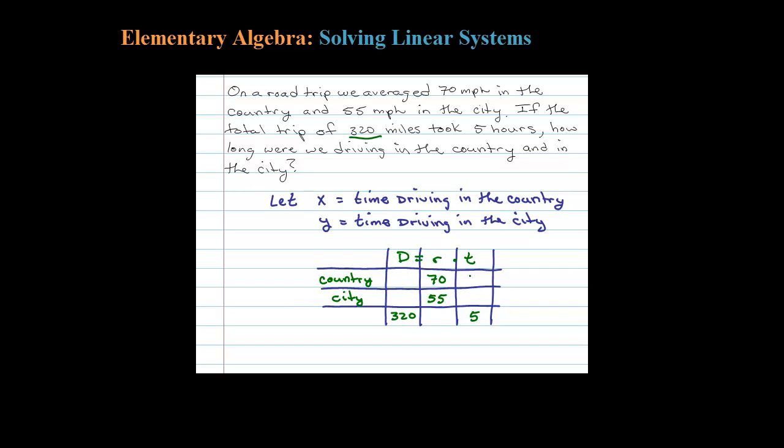Now we need to fill in some time blocks and the distance blocks. Since we don't know how long we were driving in the country we labeled that as a variable X. Since we don't know how long we were driving in the city we labeled that as a variable Y. Now the distance in the country would be rate times time, so here I could put 70X, and the distance in the city would be 55 times that time, 55Y.